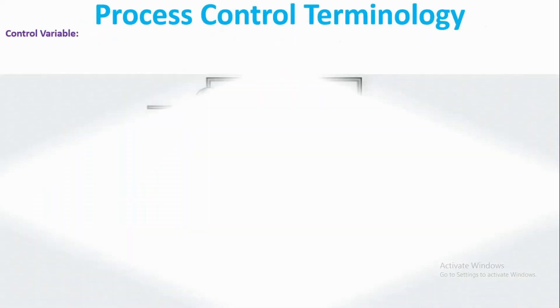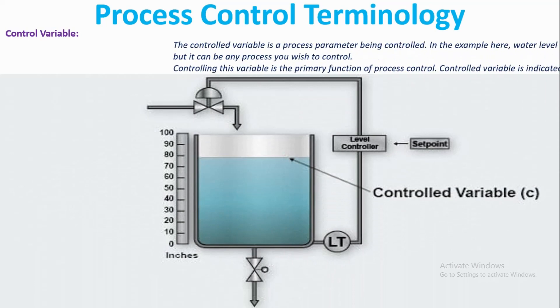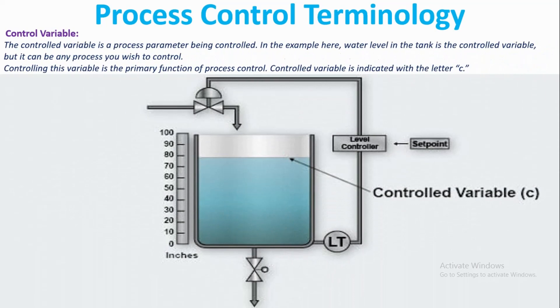Now we will see what the controlled variable is. The controlled variable is a process parameter being controlled. In the example here, water level in the tank is the controlled variable.